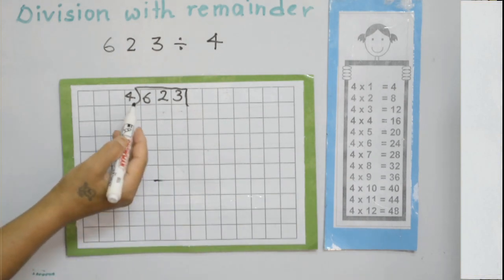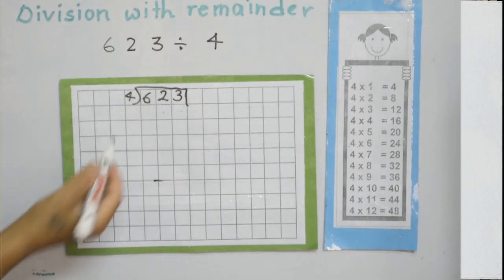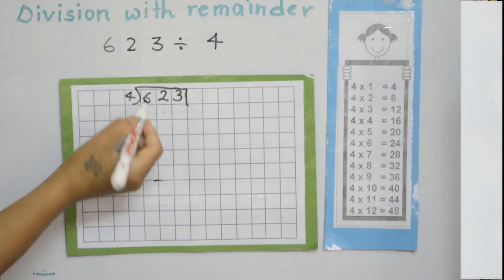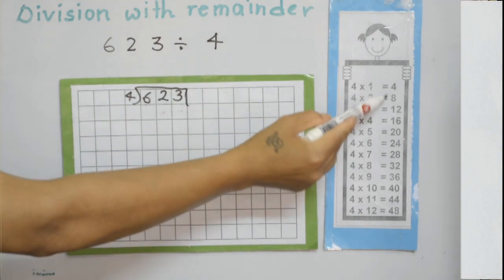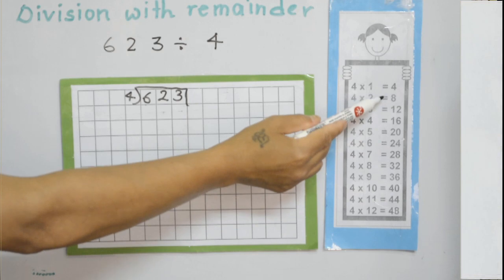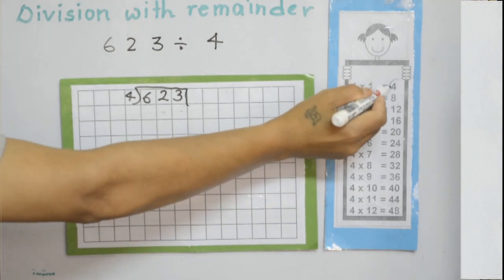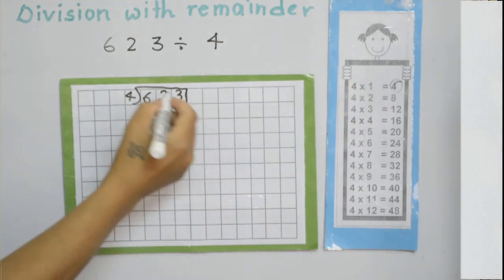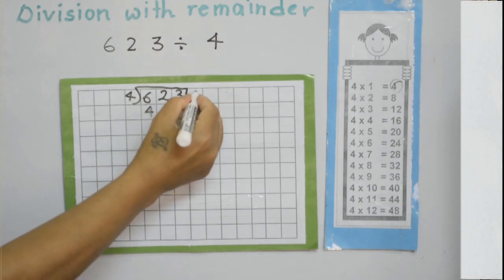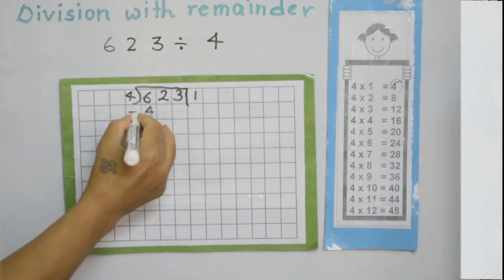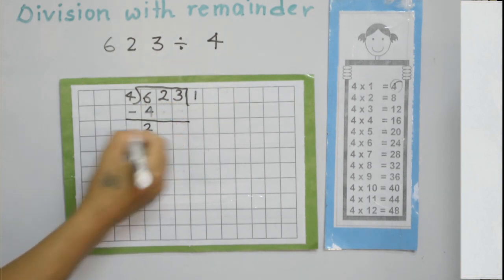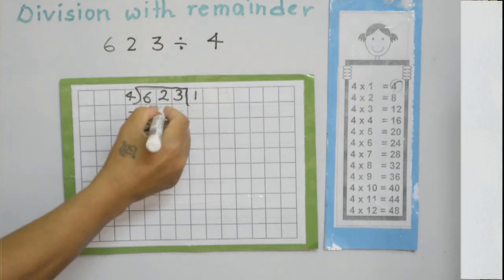Again, we divide starting from the higher place, so we divide 6 first. We don't have 6 as a multiple of 4, but the nearest number is 4. So 4 times 1 is 4. 6 minus 4 is 2.